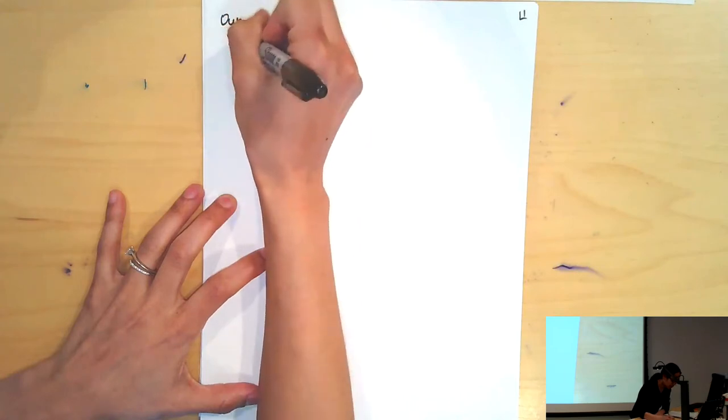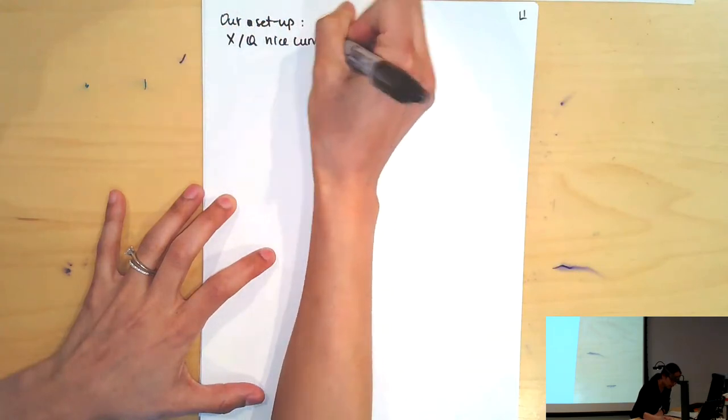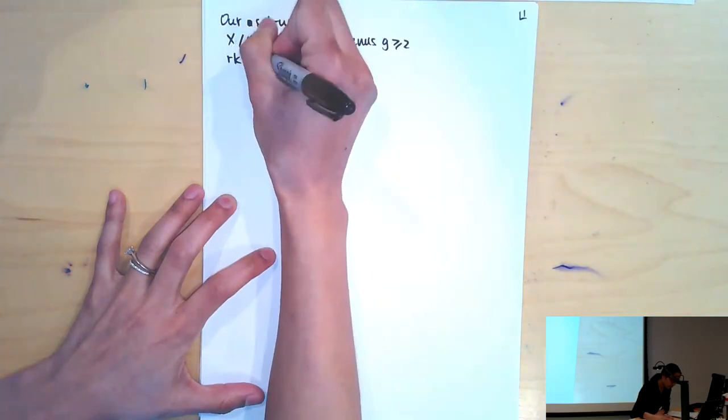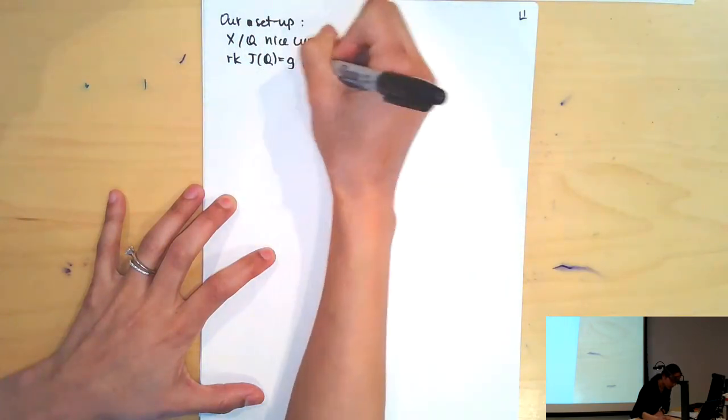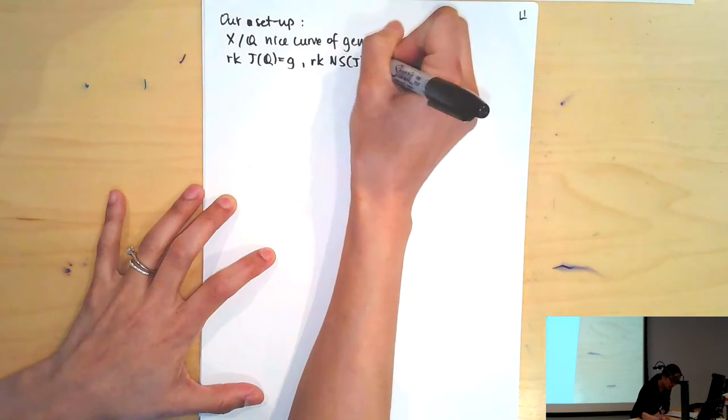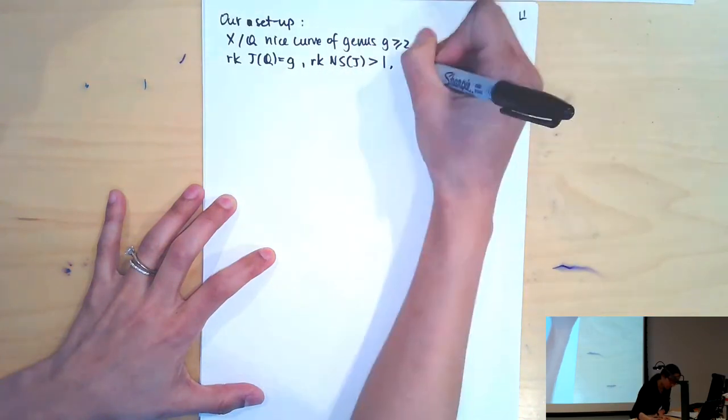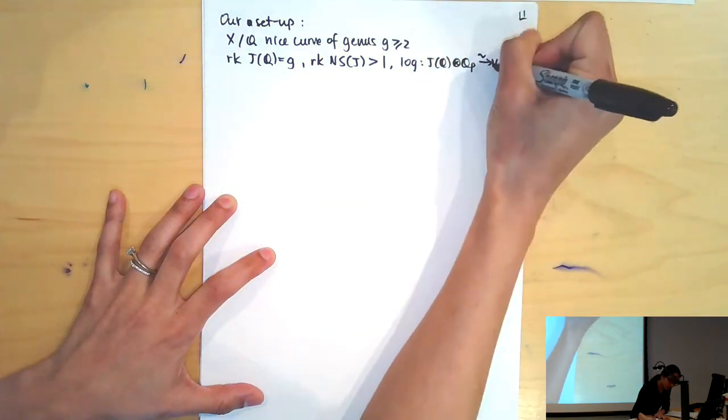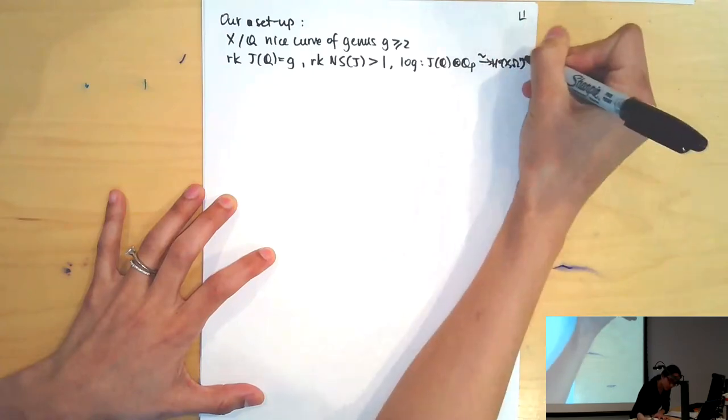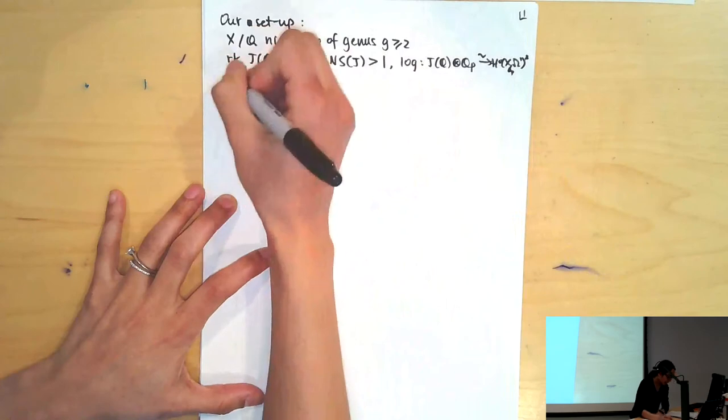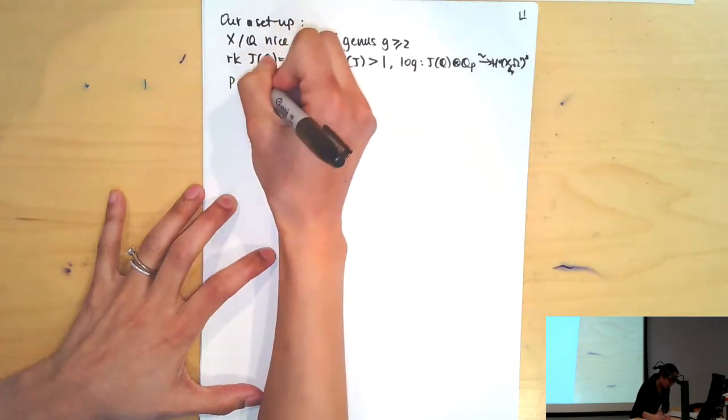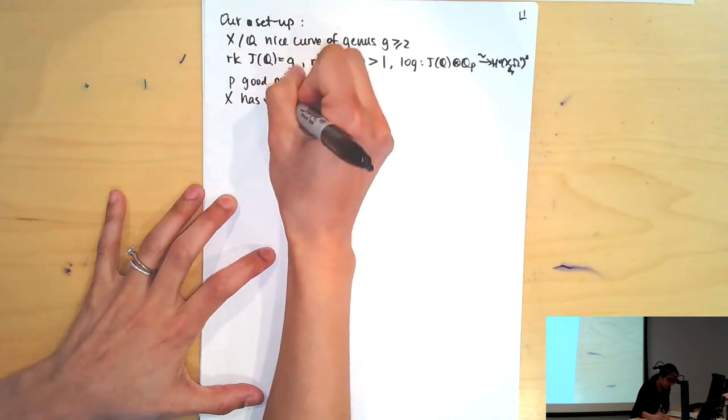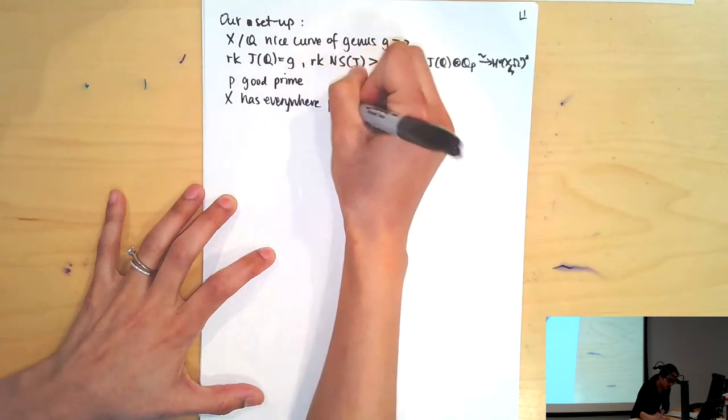We have our curve over the rationals, a nice curve of genus g at least 2. We're going to assume that the rank of its Jacobian is g, the rank of Néron-Severi is at least 1. We're going to assume that log gives us an isomorphism here over Q_p, and we're going to work with p a good prime.